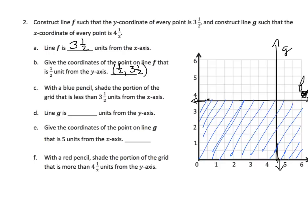Line G is blank units from the y-axis. I look at my x-axis to find out how far it is — that would be 4 and 1 half. Give the coordinates for a point on line G that is 5 units from the x-axis. I go on line G and go up to 5, looking at the y-axis. The coordinates would be 4 and 1 half for x, and 5 for y. With a red pencil, shade the portion of the grid that is more than 4 and 1 half units from the y-axis — we shade everything to the right of line G.